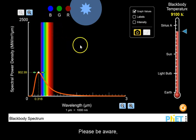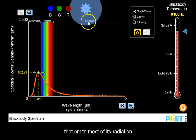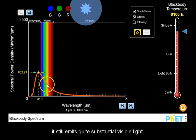Please be aware that a body that emits most of its radiation in the ultraviolet is not invisible to us, since it still emits quite substantial visible light.